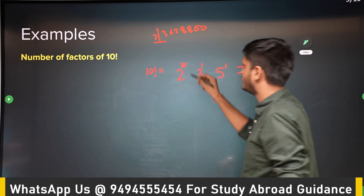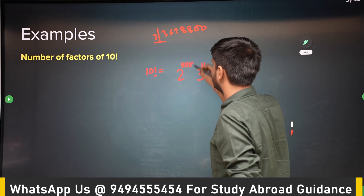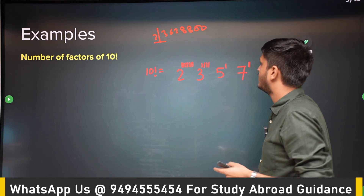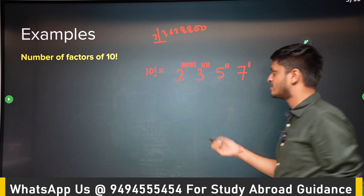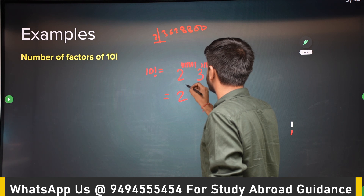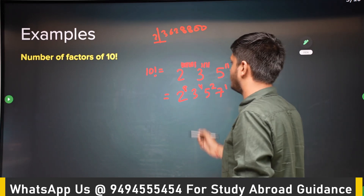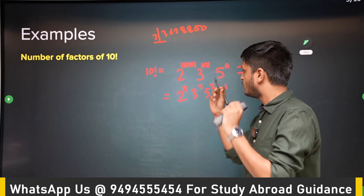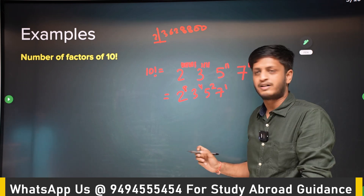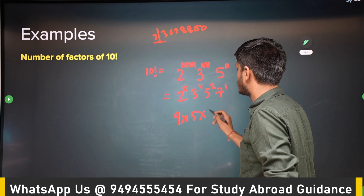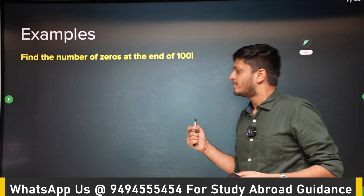Writing out the factorization: 3 appears once, 4 = 2², 6 = 2 × 3, 7 = 7, 8 = 2³, 9 = 3², 10 = 2 × 5. So 10! = 2⁸ × 3⁴ × 5² × 7¹. The number of factors is (8+1)(4+1)(2+1)(1+1) = 9 × 5 × 3 × 2 = 270. You have 9 options for the power of 2 (0 through 8), 5 for 3, 3 for 5, and 2 for 7.